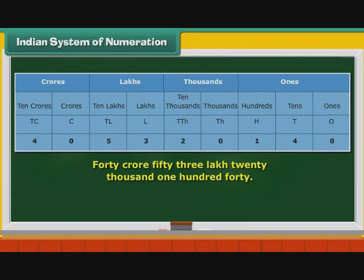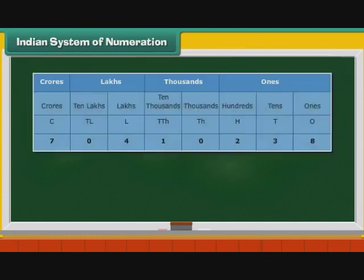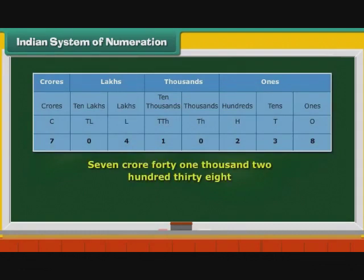Consider one more number: 700412038. We arrange it in the place value chart and then read it: 7 crore 41,238.